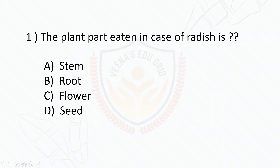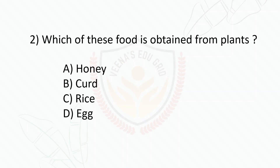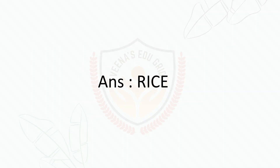The plant part eaten in the case of radish is: stem, root, flower, or seed? The answer is root. Which of these foods is obtained from plants: honey, curd, rice, or egg? The answer is rice.